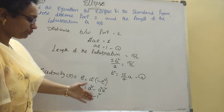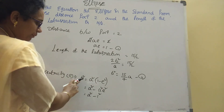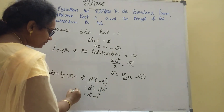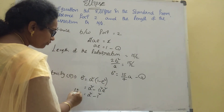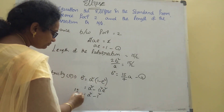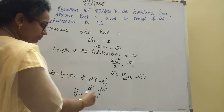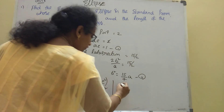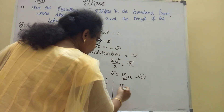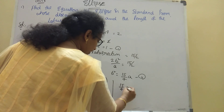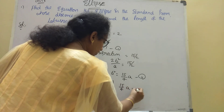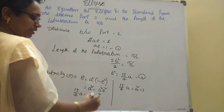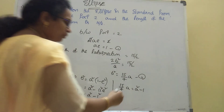So b² = a² − 1. Now apply this b² value. We have 2b²/a = 15/2, so substituting: 2(a² − 1)/a = 15/2. Multiply both sides by 4a to get 4(a² − 1) = 15a.